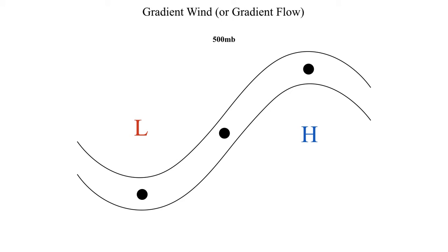Let's look at an idealized example. We'll examine an air parcel at the base of a trough, which is an area of lower pressure, and at the apex of a ridge, which is an area of relatively high pressure. We'll also look at a point in between, where the height contours are fairly straight, so we can think of that as approximately geostrophic balance.